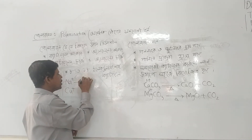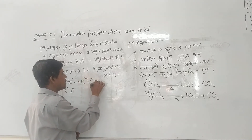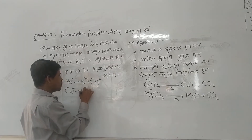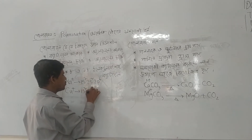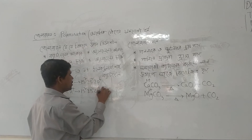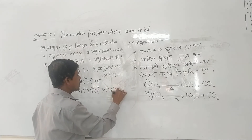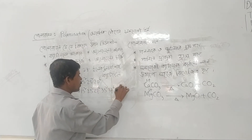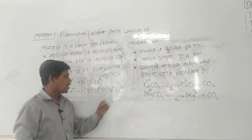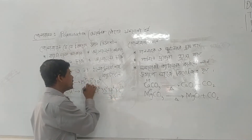The electronic configuration of sodium plus is 1s2, 2s2, 2p6. Copper plus is 1s2, 2s2, 2p6, 3s2, 3p6, 3d10, because 4s1 is lost giving 3d10.